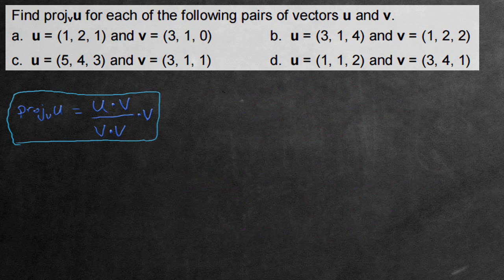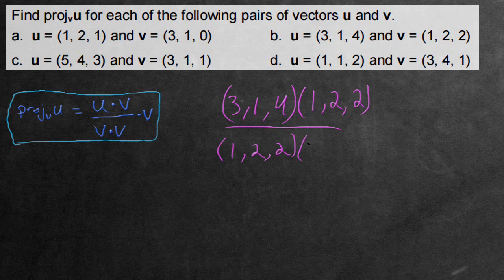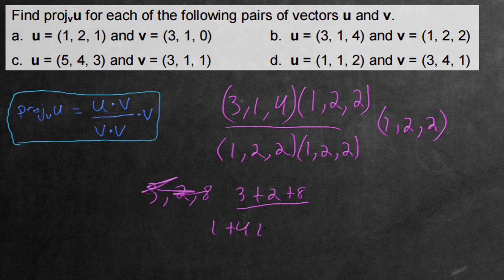Let's move on to question B. Doing the same thing, we have (3, 1, 4) multiplied by v, which is now (1, 2, 2). This divided by (1, 2, 2) times itself, which is (1, 2, 2). And on the outside, we have another v, so (1, 2, 2). Multiplying it through in the numerator, we're actually adding all of these, so 3 add 2 add 8. Divided by 1 add 4 add 4.